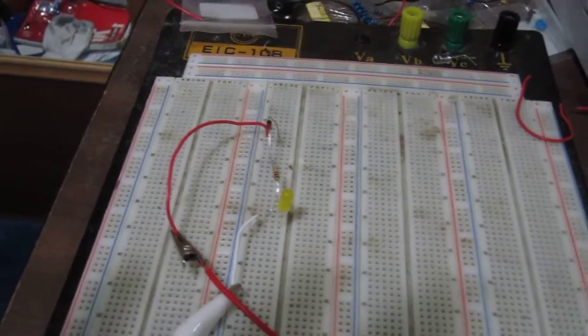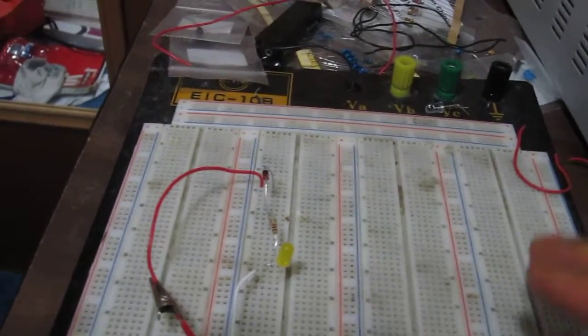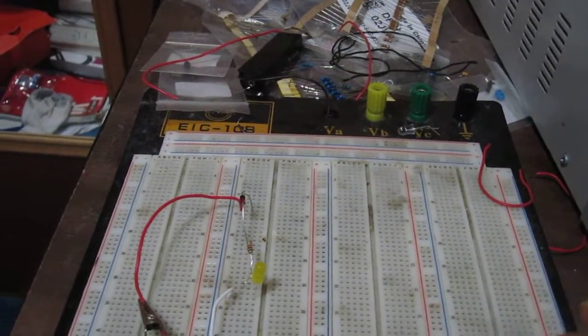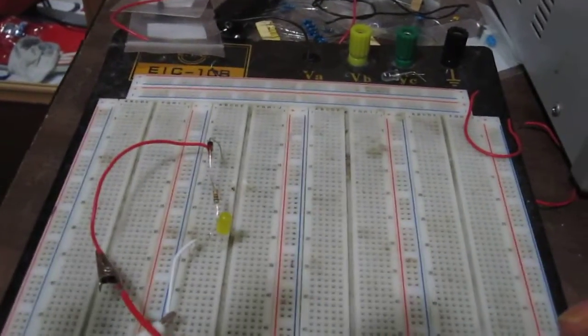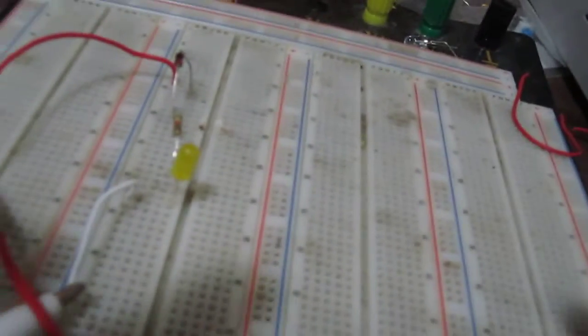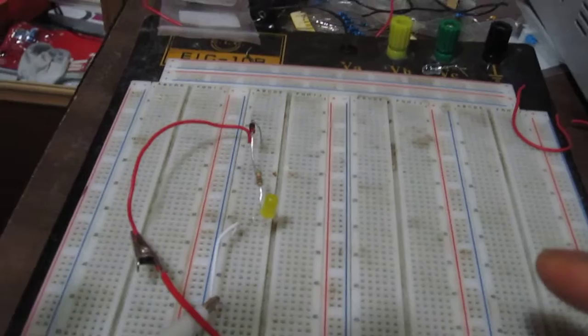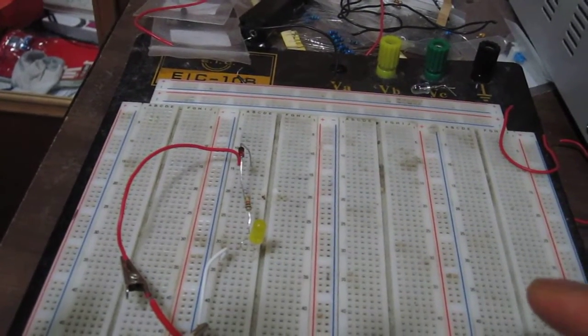In this video I'm going to demonstrate how a zener diode can be used to function as a voltage level indicator. The zener diode I'm using is a 1N4741 zener diode. It has a breakdown voltage of 11 volts.